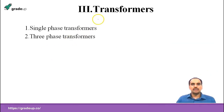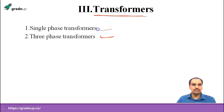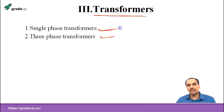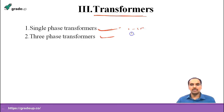The third important topic will be transformers. Transformers is a very easy topic. First one is single-phase transformers and second one is three-phase transformers. Mostly they will ask questions on single-phase transformers — what are the types of windings, equivalent circuit, then tests like OC and SC tests. Based on this we may expect one question here, and also losses and voltage regulation of transformers — one or two more questions based on that.